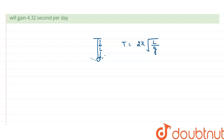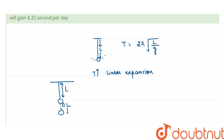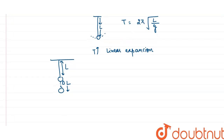When temperature is increased, linear expansion takes place and the length of the rod changes. The new length after the temperature increase is l plus delta l, where delta l is the change in length. The new time period T' is written as 2π√((l + Δl)/g).